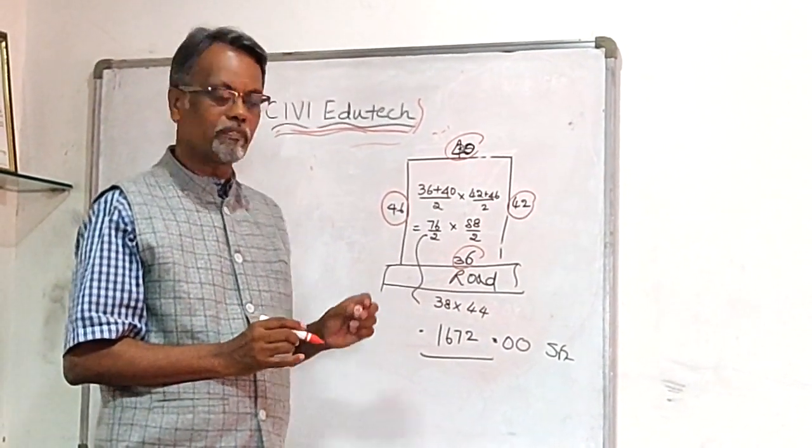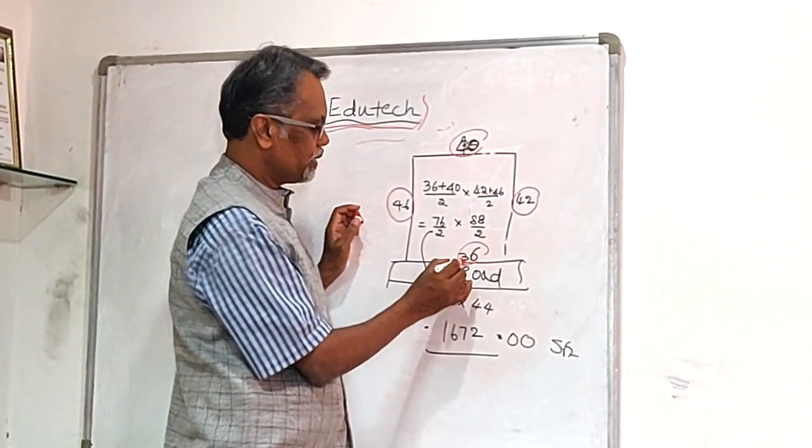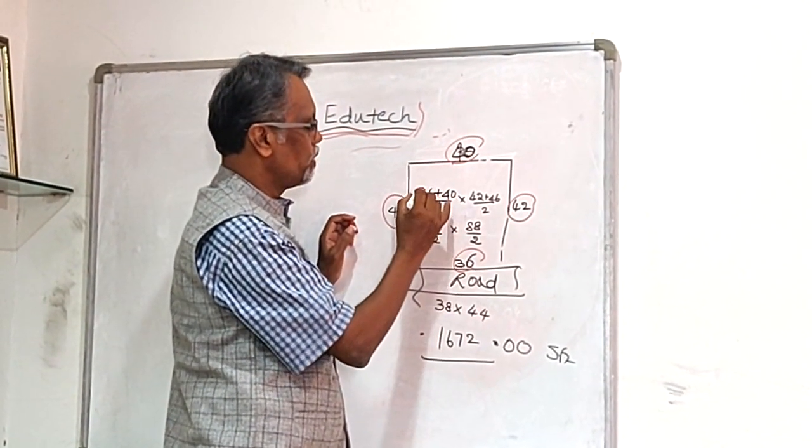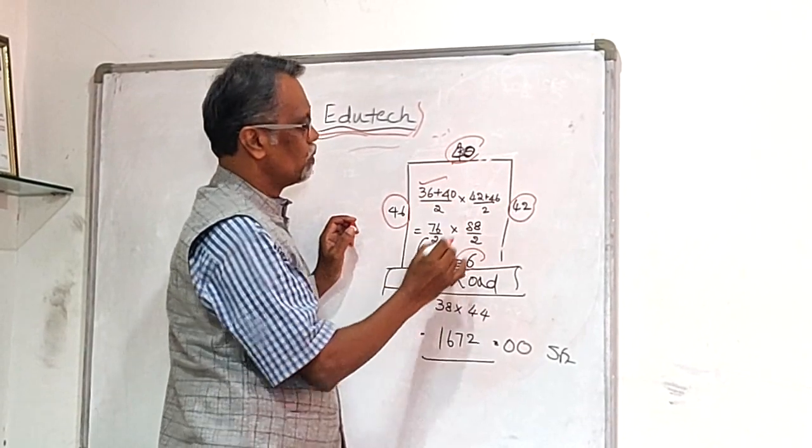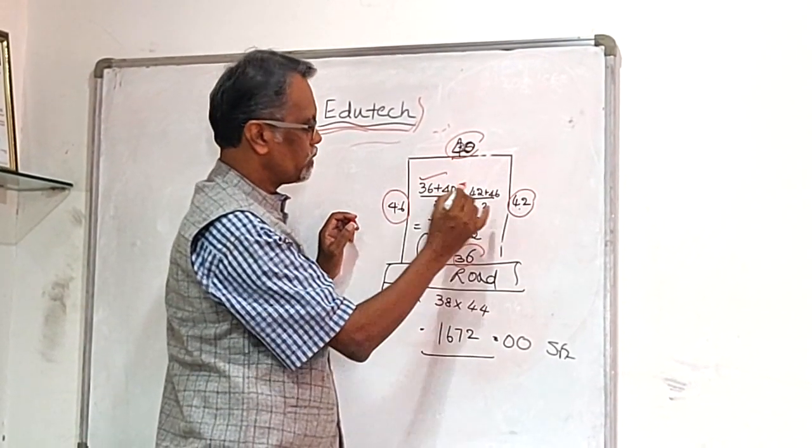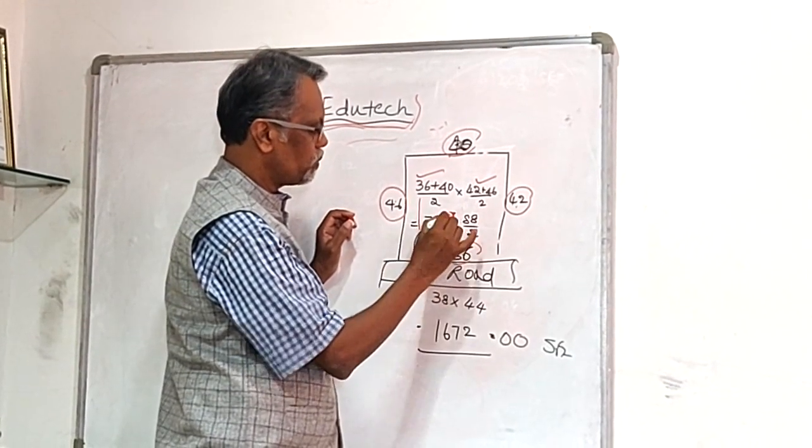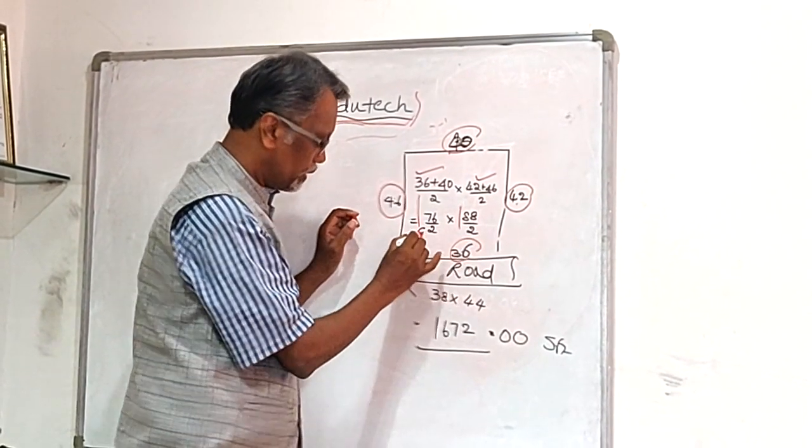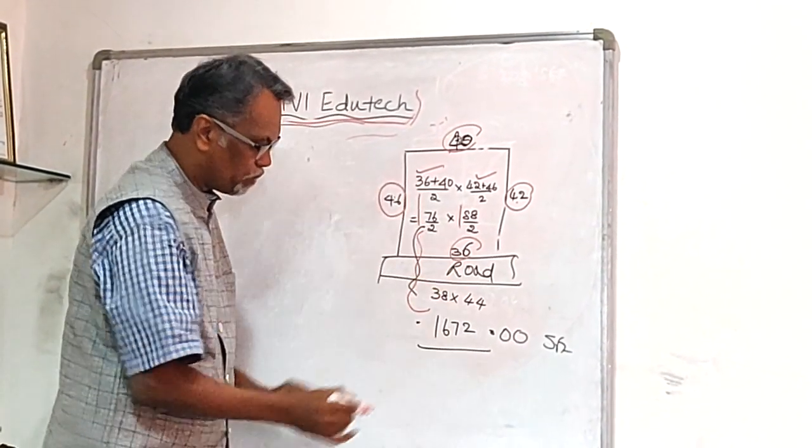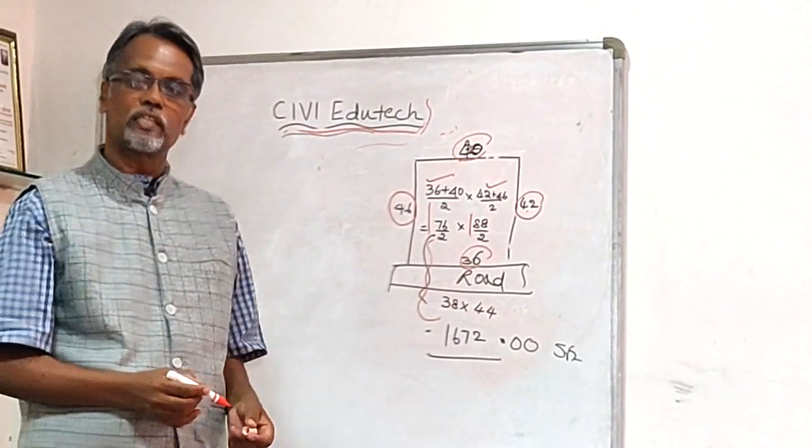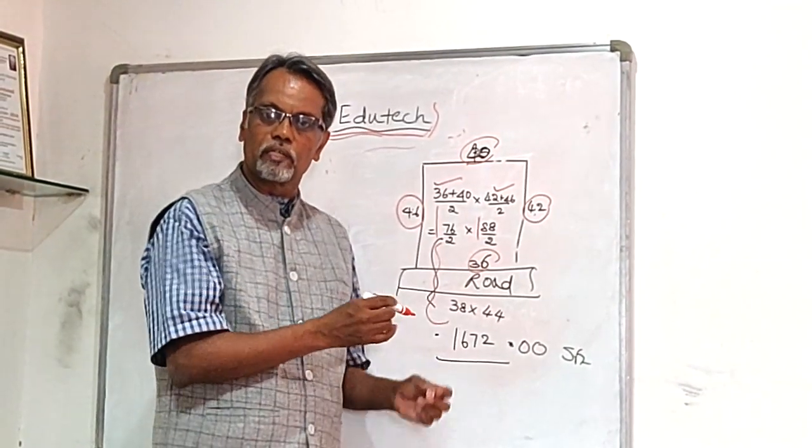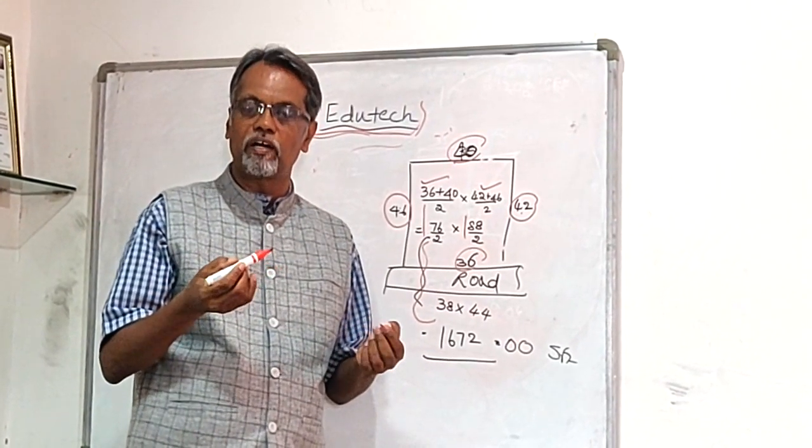What are we going to do? 36 plus 40 divided by 2, 42 plus 46 divided by 2. Then the answer is 76 by 2, 88 by 2. Obviously, this is 38 by 44. This is 1672. See, these simple calculations.